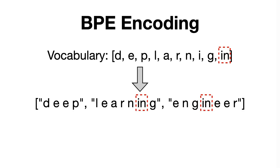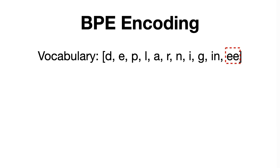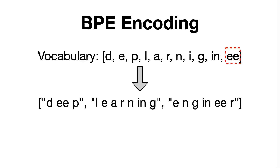Next, we repeat the process and merge the tokens again, and calculate the frequencies, resulting in EE having the highest frequency. So we add it to the vocabulary. Now if we were to tokenize the sentence with the updated vocabulary, we obtain the following. We can see that both IN and EE are now treated as separate tokens, which is what we expect.